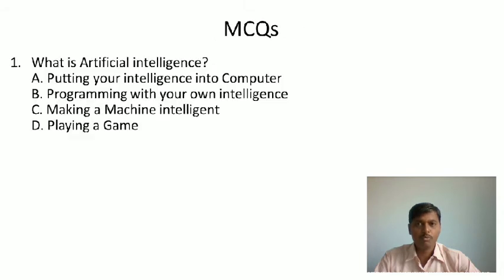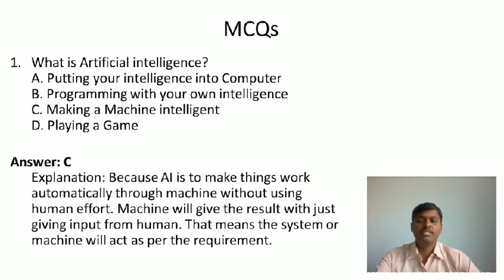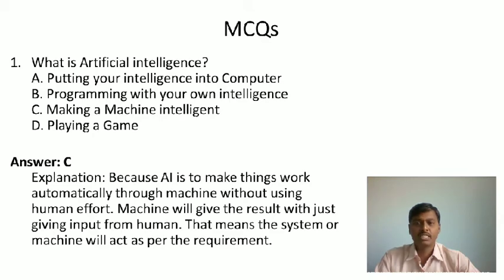We will now go through some MCQs based on the above explanations. First: What is artificial intelligence? A. Putting your intelligence into a computer. B. Programming with your own intelligence. C. Making a machine intelligent. D. Playing a game. Answer is C — making a machine intelligent — because artificial intelligence is to make things work automatically through machines without using human effort; the machine gives results with just input from a human, and the system acts as per the requirement.